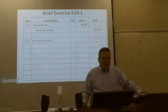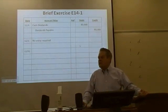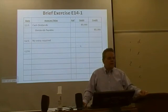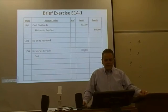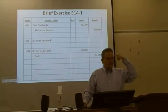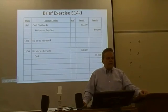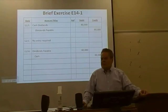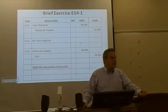Make an entry on the date of payment — this may be the easiest entry this week. Debit dividends payable for $80,000 and credit cash for $80,000. The balance of dividends payable after this entry is zero.